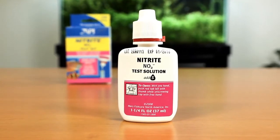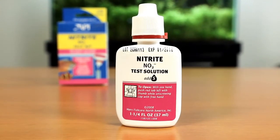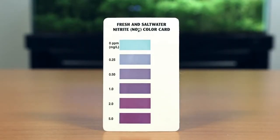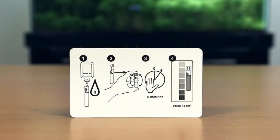The API Nitrite Test Kit uses just one bottle of test solution. The nitrite color card is calibrated for both fresh and saltwater. Testing instructions can be found in the manual and on back of the color card.